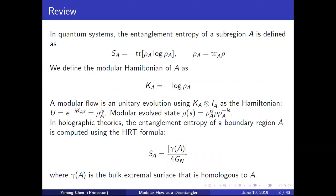In this talk we will be extensively using the word modular. We define the modular Hamiltonian of a sub-region A as the minus of the logarithm of the reduced density matrix — it is a Hermitian operator. A modular flow is a unitary evolution using the modular Hamiltonian K_A tensored with the identity on the rest of the system. The unitary operator is simply e^{-iK_A s}, where s is the modular flow parameter, which can also be written as ρ_A^{is}.